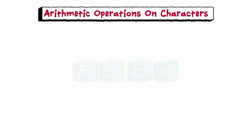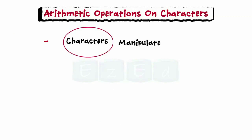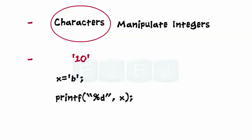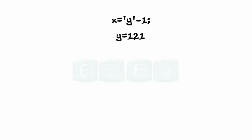Now let's learn how to perform arithmetic operations on characters. C allows us to manipulate characters in the same way as integers. When a character constant is used in an expression, it is automatically converted into an integer value. We can know the integer value of a character by representing it as an integer — for example, this will display 98 on the screen. We can also perform arithmetic operations on character constants and variables. In ASCII, the value of 'y' is 121, so after evaluation, x is assigned 120 as a result.